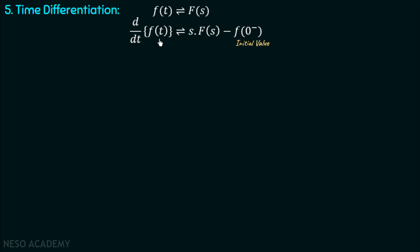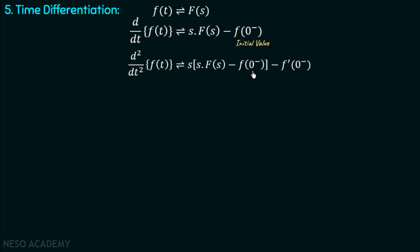Similarly, if we differentiate this function one more time, the second order derivative of f(t) will have a Laplace transform s·[s·F(s) minus f(0⁻)] minus f′(0⁻). Here, the factor s·F(s) minus f(0⁻) is the Laplace transform of the first derivative of f(t). Since we are differentiating again, its Laplace transform is multiplied by s and its initial value f′(0⁻) is subtracted. Here f′(0⁻) is the initial value of f′(t).